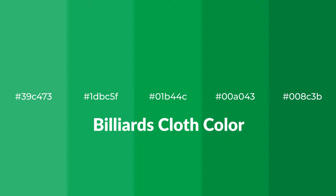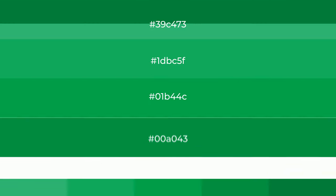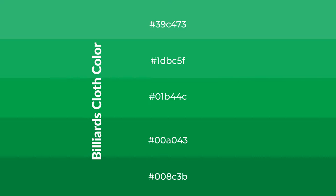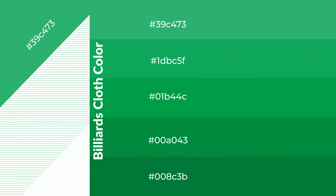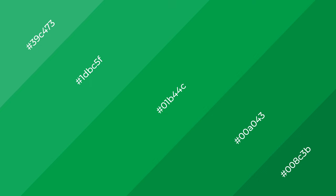Cool shades of billiards cloth color with green hue for your next project. To generate tints of a color, we add white to the color. Tints create light and exquisite emotions. To generate shades of a color, we add black to the color, and it is used in patterns, 3D effects, and layers. Shades create depth and drama.